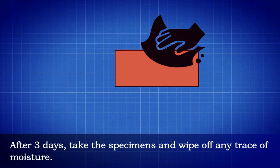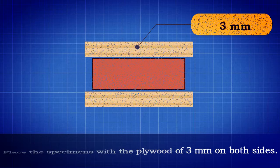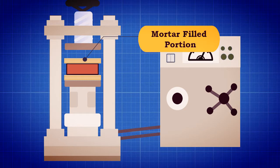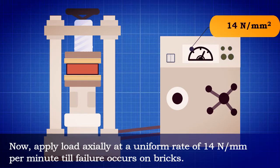After 3 days, take the specimens and wipe off any trace of moisture. Place the specimens with the plywood of 3 millimeters on both sides in the compression testing machine with the mortar filled portion facing upwards. Now apply load axially at a uniform rate of 14 Newton per millimeter square per minute till failure occurs on bricks.